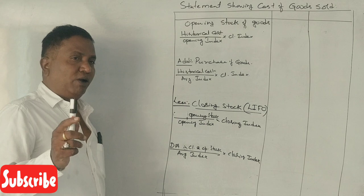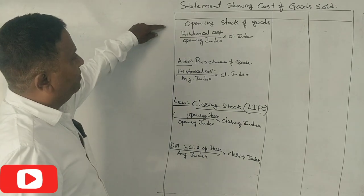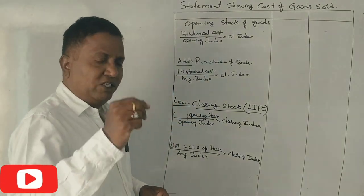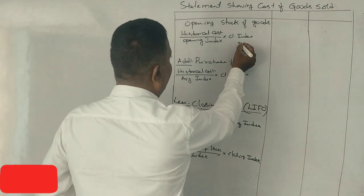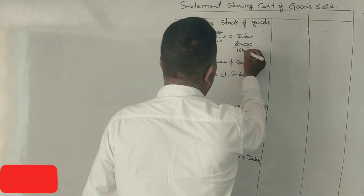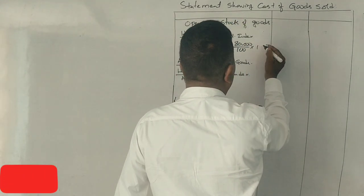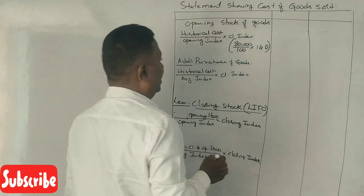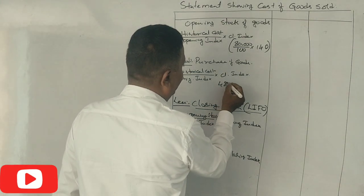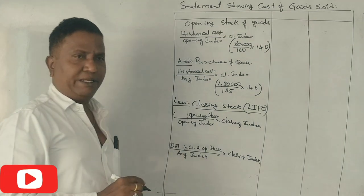This is FIFO or LIFO. If you want the LIFO method, opening stock plus purchase is common. Opening stock is 80,000, opening index is 100, average is 125, closing index is 140. Purchases are 4,80,000. Average is 125, closing is 140,000.